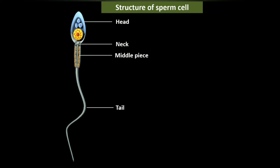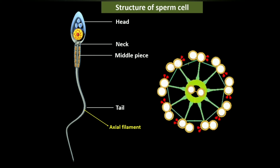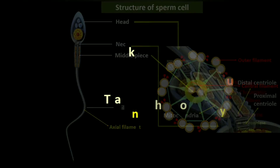The tail is long and cylindrical and consists of an axial filament known as the flagella. The flagella is composed of a core of microtubules with a nine-plus-two arrangement: two central filaments surrounded by nine outer filaments. The flagellated tail propels the sperm cell, enabling it to reach and fertilize the egg. Thank you so much.